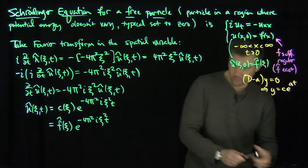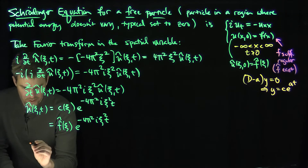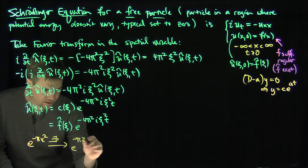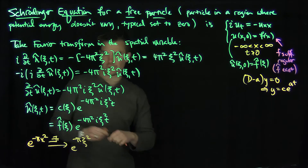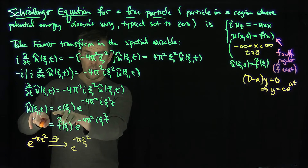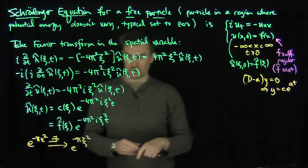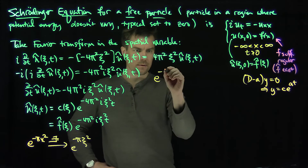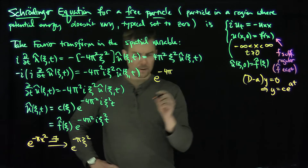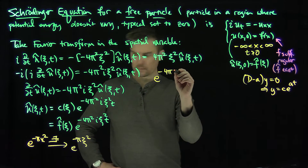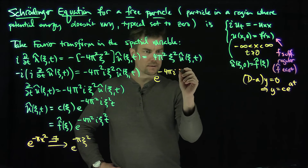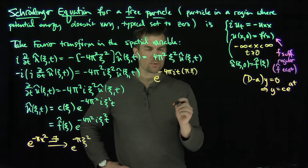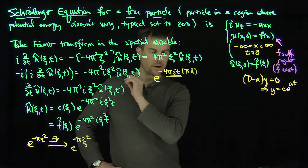Now let's recall our rule for Gaussians: e^(−πx²) Fourier transforms to e^(−πξ²). We need to use this rule together with the scaling law to invert our expression. Looking at the kernel e^(−4π²i ξ² t), we can write it as e^(−4·(π·i·t)·πξ²), pulling out factors to match the Gaussian rule.